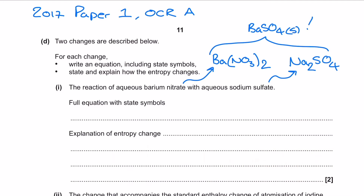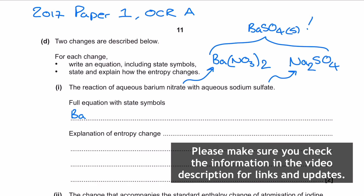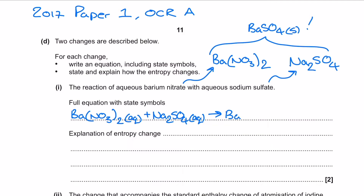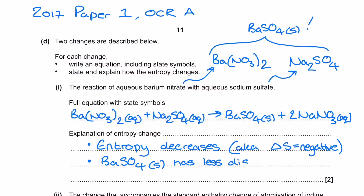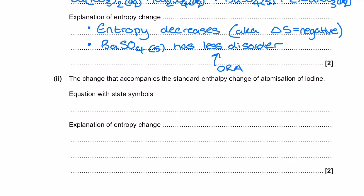Kicking us off we have this question section from Paper 1 2017 on the OCR A specification. There are some quite specific instructions here and a sectioned answer space, so I'm going to make sure I annotate before tackling the full response. The link here to another topic is qualitative analysis in module 3, where we learn that aqueous barium ions and aqueous sulfate ions make a white precipitate of barium sulfate. Linking this to module 5, reactions which form a solid are going to typically have negative entropy changes as solids have more order. You can see I've got full representation of the balanced reaction equation with state symbols and a brief two bullet point explanation for the negative delta S.